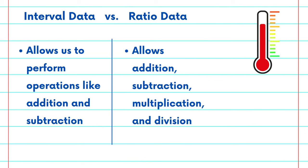We can not only add and subtract, but we can also multiply and divide. For instance, we can say that someone who is 180 cm tall is twice as tall as someone who is 90 cm tall. This makes ratio data incredibly versatile. We can calculate meaningful ratios and percentages and perform more advanced statistical analysis.